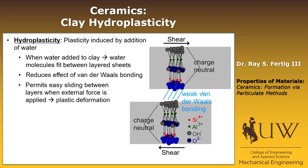Think back to when we talked about metals — what did dislocations do? They allowed one layer to slip relative to the other; that's what gave us plastic deformation. It's the same thing here, except now we're sliding one layer of clay over another, and that's being facilitated by water molecules diffusing in between the layers.